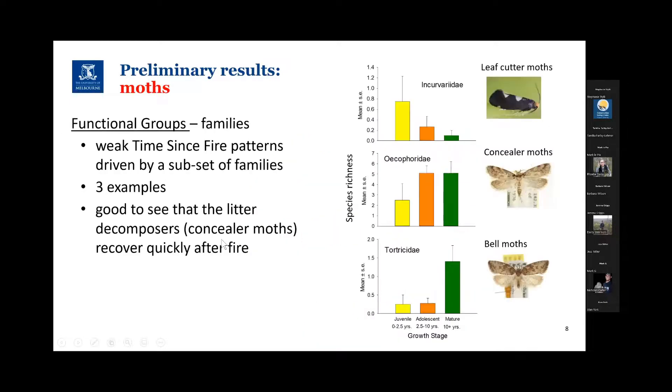So what's driving those patterns? Well, what I'm looking at here is functional groups, so family level identification of moths. I'm just showing three examples, three families, and the data show the mean and standard error number of species found at the three different growth stages. We have a group up here, the leaf cutter moths, where they're most species rich in the younger years after fire.